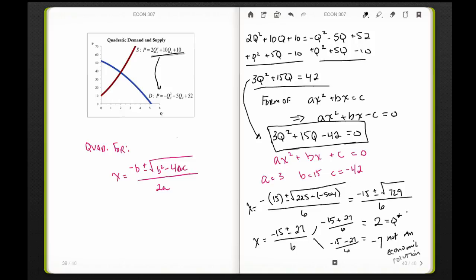Our equilibrium quantity is q* = 2. To find P*, we plug that into either demand or supply equation. So 2(2²) + 10(2) + 10 gives us 38. Or we could have plugged this into the demand equation: -2² - 5(2) + 52, and we get 38 again.